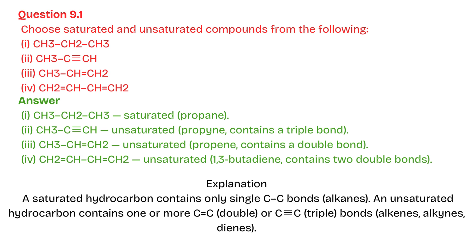Answer: 1. Saturated — propane. 2. Unsaturated — propyne, contains a triple bond. 3. Unsaturated — propene, contains a double bond. 4. Unsaturated — 1,3-butadiene, contains two double bonds.